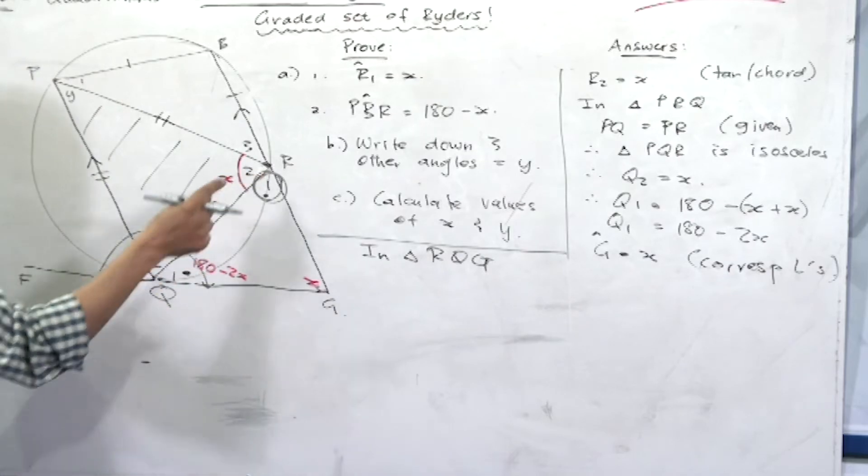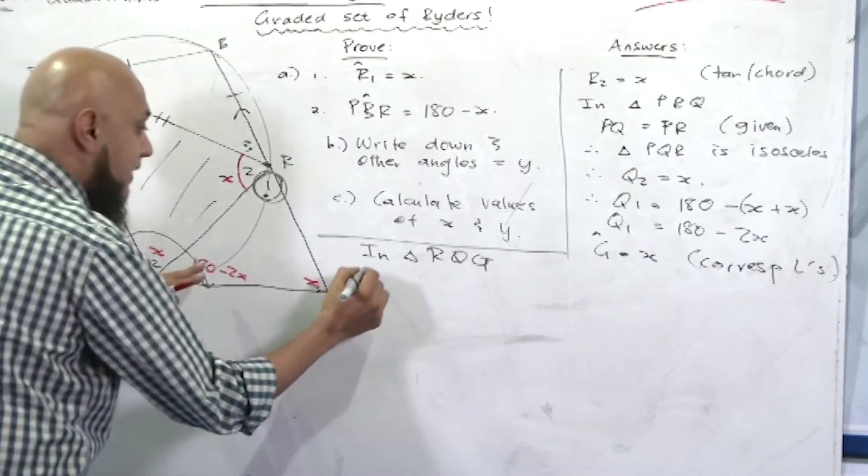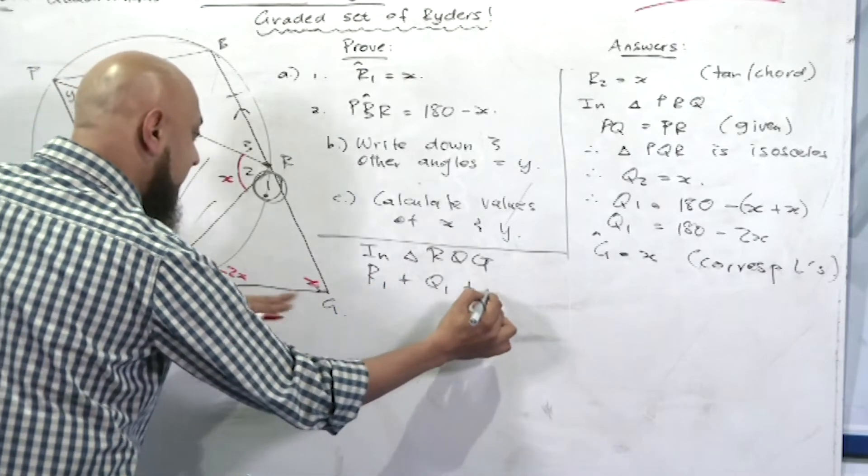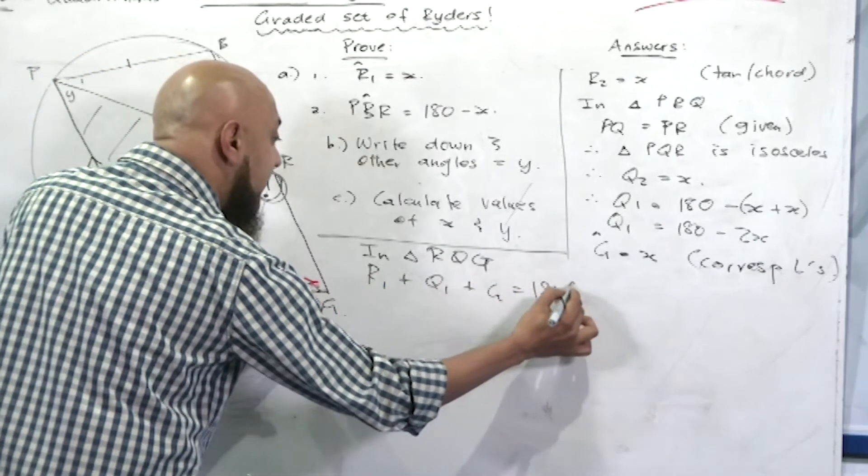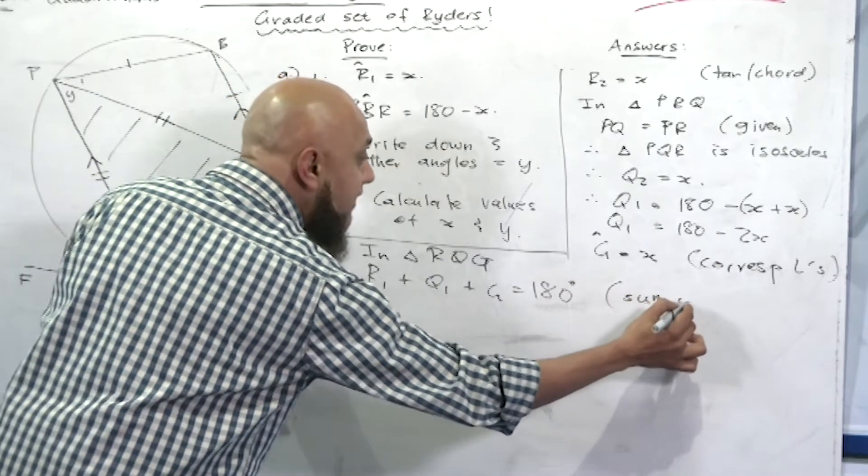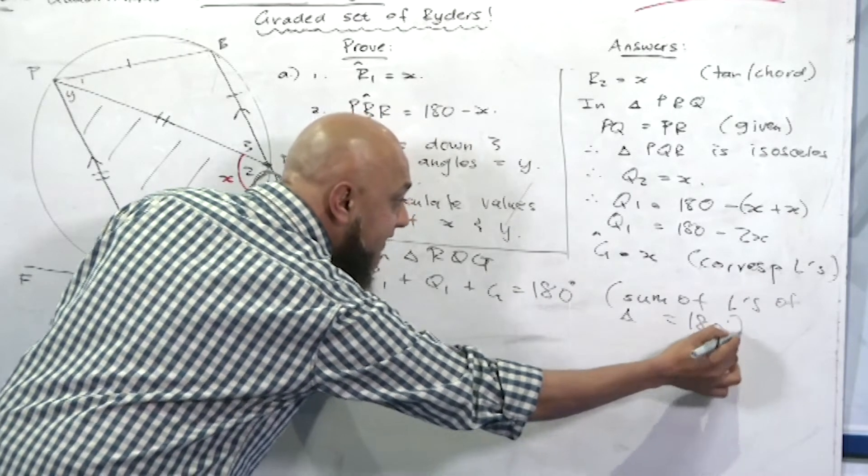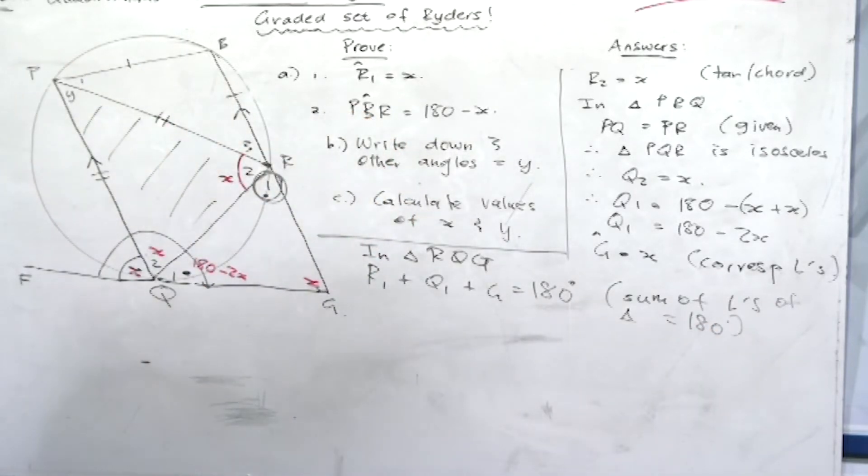Let's continue here. I'm going to say in triangle RQG, you're telling the person who's marking your paper, please look at this triangle here. r1 plus q1 plus g is equal to 180 degrees. Sum of angles of a triangle, sum of angles of a triangle equal to 180 degrees.